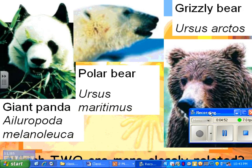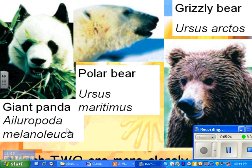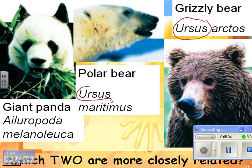Here's an example of what you can do just with naming. We have three organisms: the giant panda, the polar bear, and the grizzly bear. The grizzly bear's name is Ursus arctos. The polar bear is Ursus maritimus. The giant panda is Ailuropoda melanoleuca. The grizzly and polar bear share the same genus name, Ursus, while the panda does not — so the polar bear and the grizzly bear are more closely related to each other than they are to the giant panda.